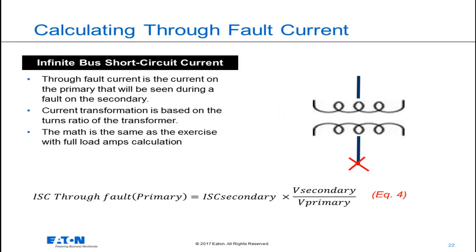When a short circuit occurs on the secondary of a transformer, the current that flows in the primary will not be the same as that being delivered to the fault on the secondary. The difference is going to be dependent upon the turns ratio of the transformer. We can reflect the secondary current to the primary, and this is a simple calculation based upon the turns ratio. The primary current is equal to the secondary current times the secondary voltage over the primary voltage. It's shown here in equation number four.